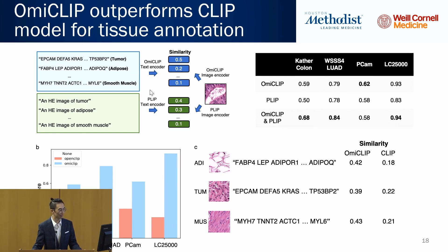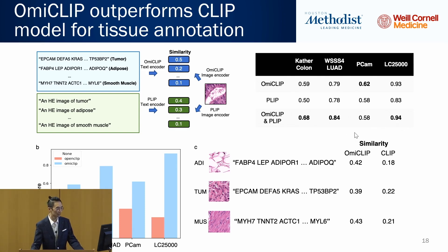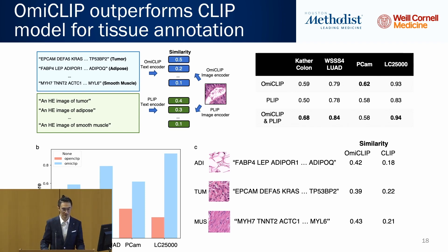Because existing algorithms can annotate tissue based on natural language — for example, 'this is an H&E staining image of tumor' or 'this is smooth muscle' — their model annotates tissue based on natural language, while our model annotates based on marker genes. We merged these two types of information together. You can see our transcriptomic model outperforms the language model, and merging the two further boosts performance. Across lung cancer, breast cancer, and other cancer datasets, our model performs best, and the triple-modality model works even better. Different data modalities carry different information, and integrating them gives better tissue annotation.